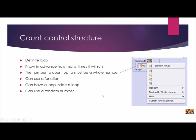The count control structure can do more than we've used it for — it is a definite loop. A definite loop knows in advance exactly how many times it will run; it decides before it starts and does exactly that. The number to count must be a whole number — you count one, two, three, four, not fractions or decimals. You can use a function as long as you change the number to a whole number. You can also have a count inside a count, called nesting, and you can use a random number as long as it's a whole number.